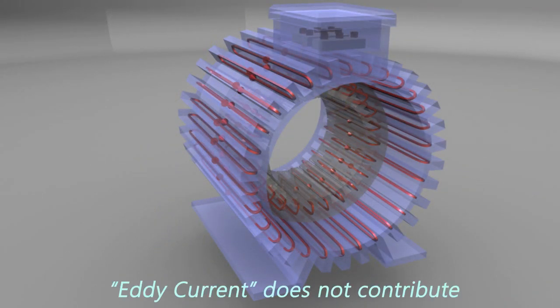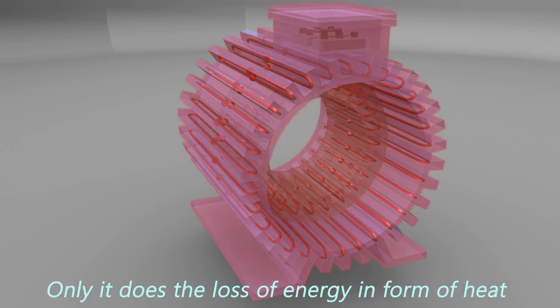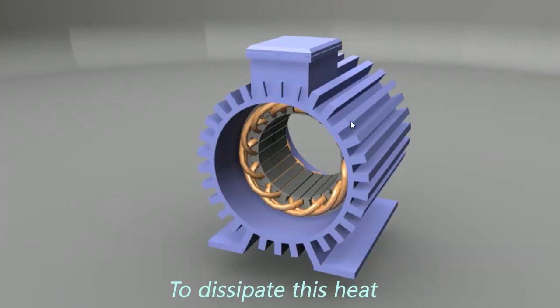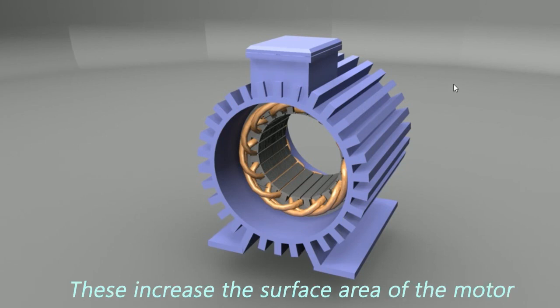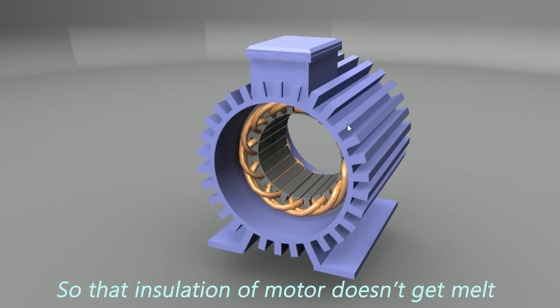Eddy current does not contribute in the function of the induction motor. Only it does the loss of energy in form of heat. To dissipate this heat, the strips are placed on the frames of induction motor. These increase the surface area of the motor and the temperature of motor remain in the limit, so that insulation of motor doesn't get melt and not cause short circuit between turns of the winding.